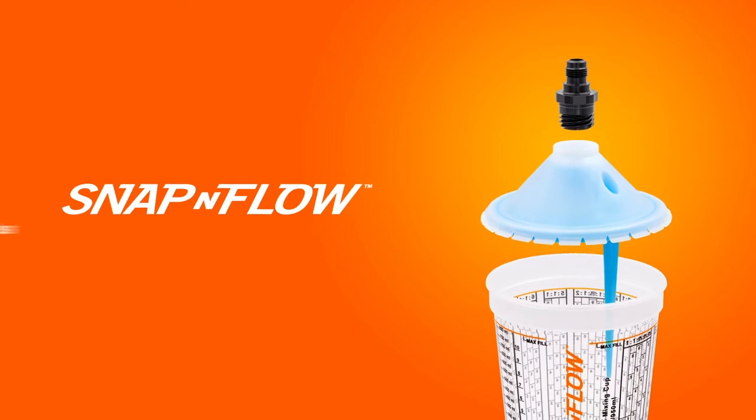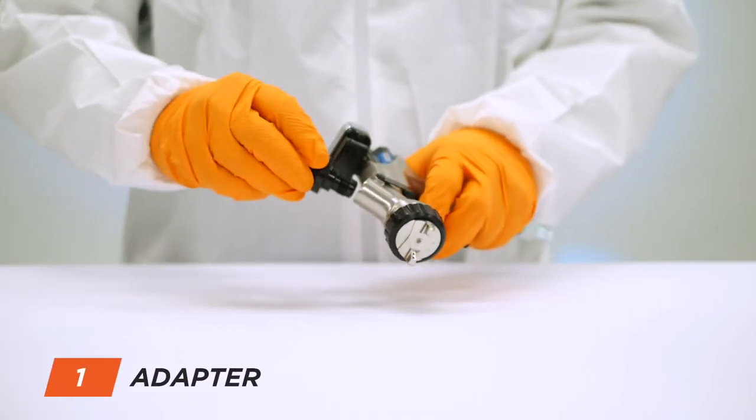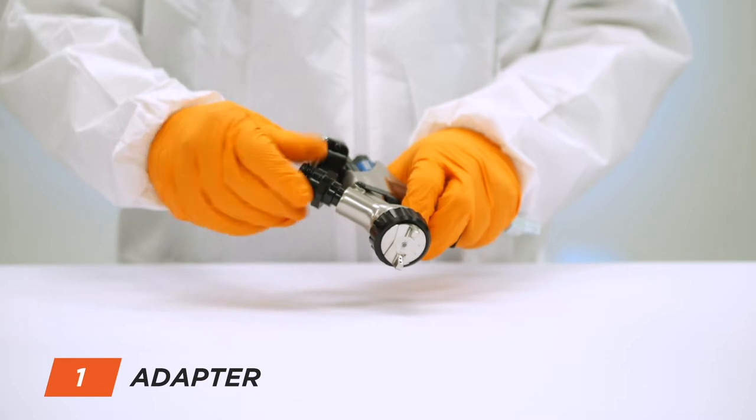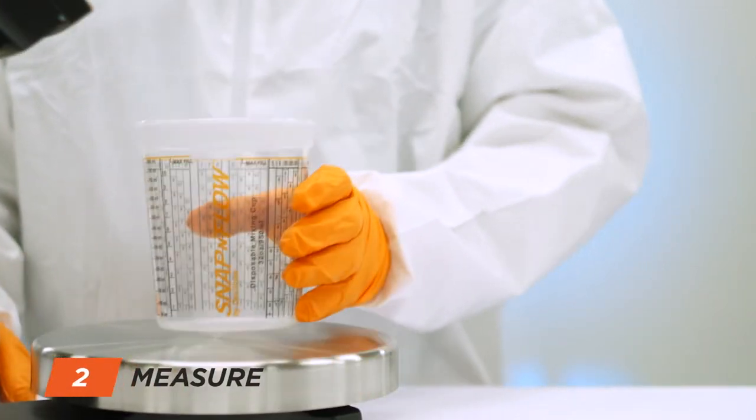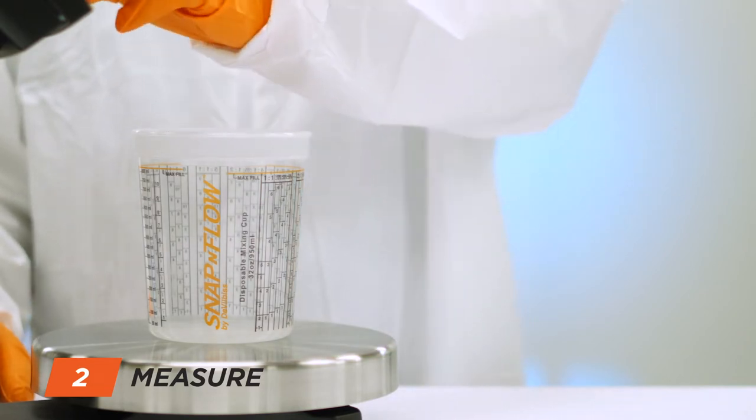Here's how to use Snap and Flow. Place the appropriate Snap and Flow adapter onto the spray gun using a large crescent wrench. Take a Snap and Flow disposable mix cup and place on the mixing scale.